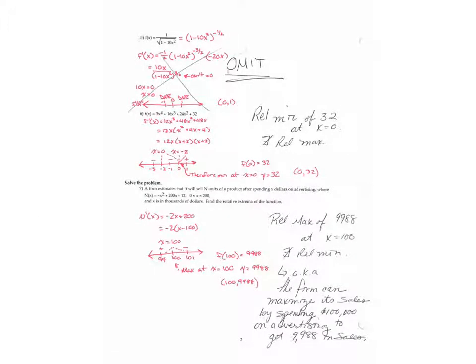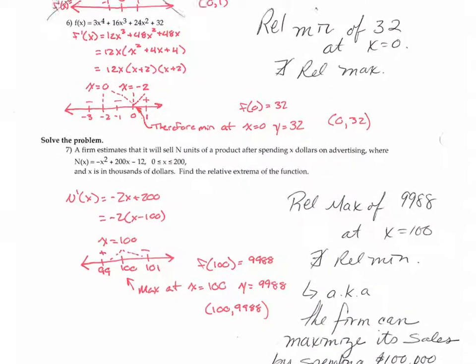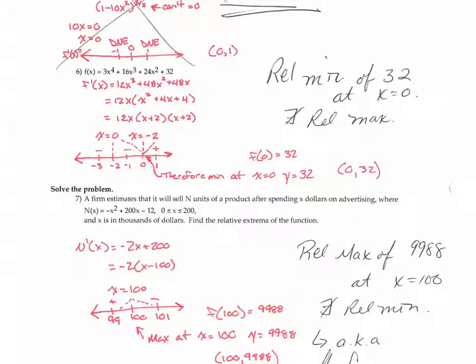For the next page go ahead and skip number 5 and let's go ahead down to number 6 then. And when we do that we still do the same thing. Take the derivative of each piece and then we're going to set each one equal to zero. I see we're missing that zero here. Zero, zero. And then we take each factor and set it equal to zero so 12x gives us zero. So this guy gives us negative 2 so does this one.